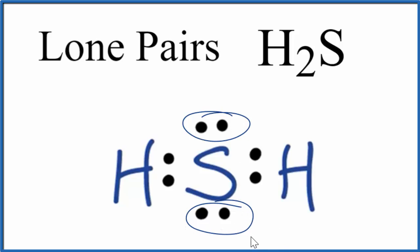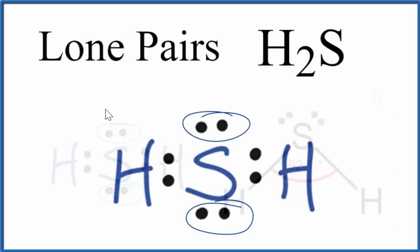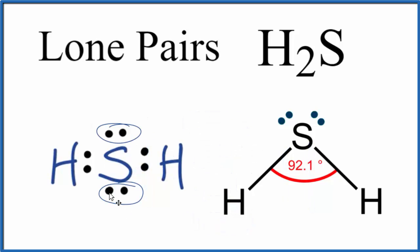We have one, two — two lone pairs for H2S. These are important because they determine the molecular geometry. The lone pairs right here actually occupy space and they push the hydrogen atoms down, so we end up with a bent molecular geometry for H2S, and that's because of these two lone pairs. The bonding pairs are often represented by a line to show that it's a chemical bond between the atoms.